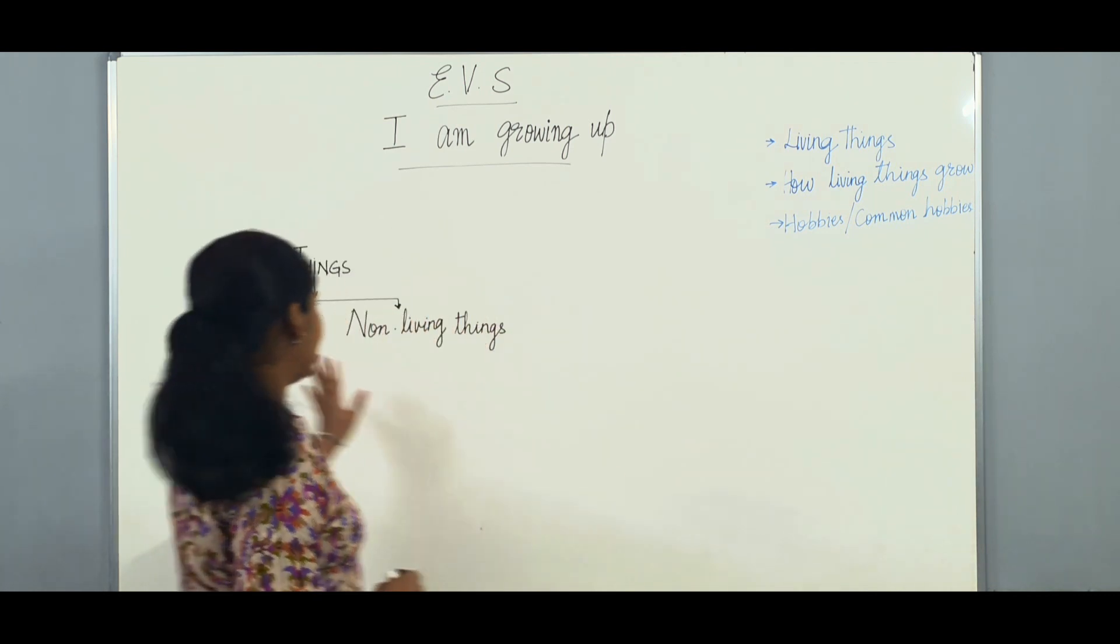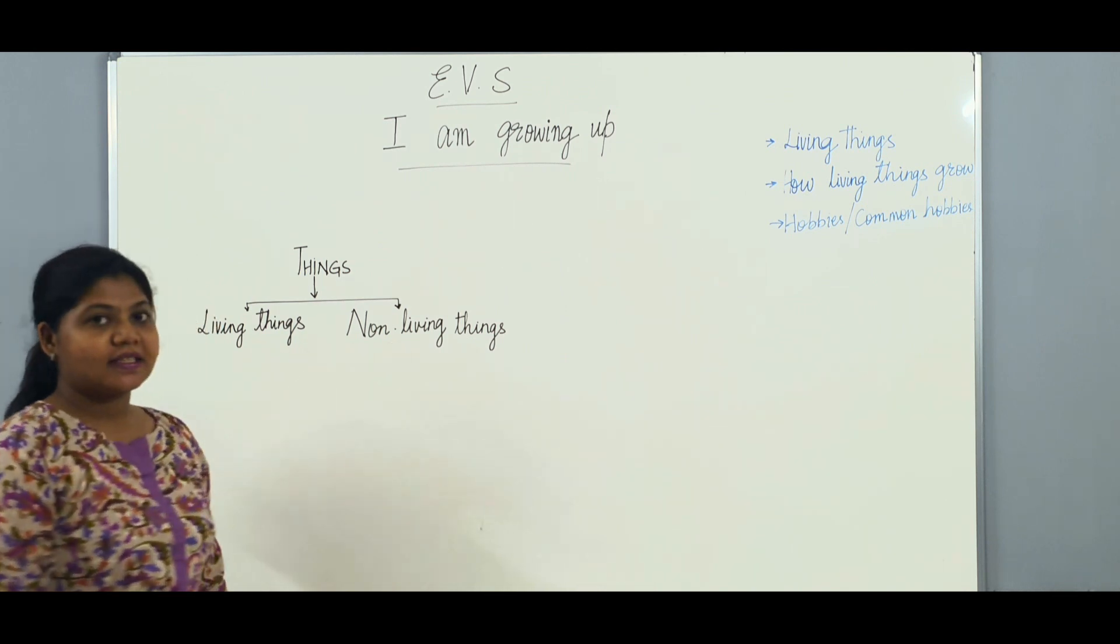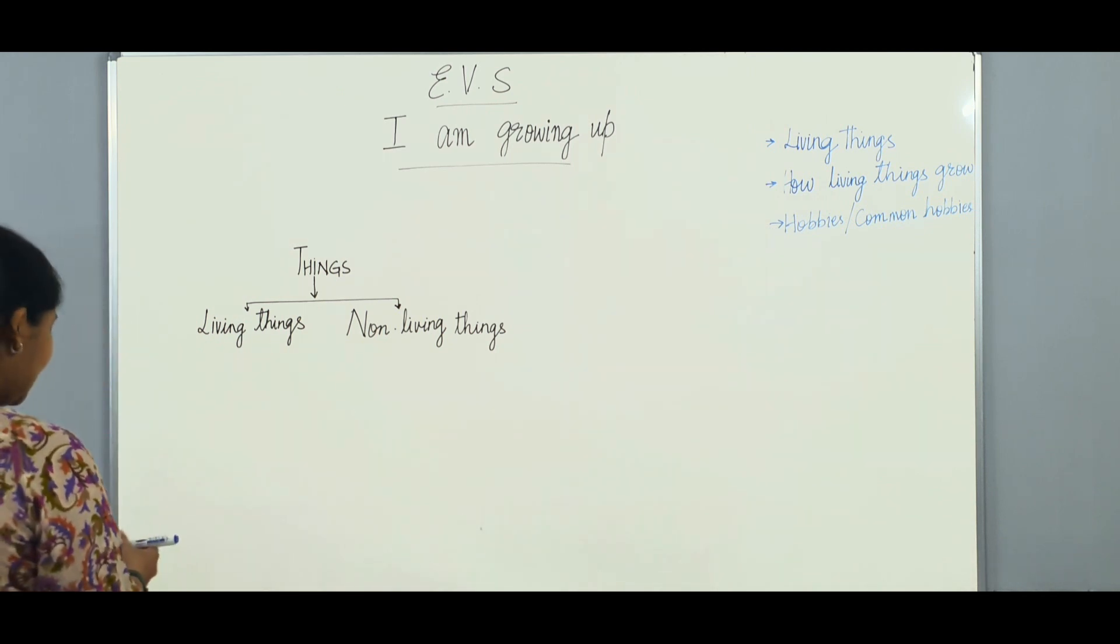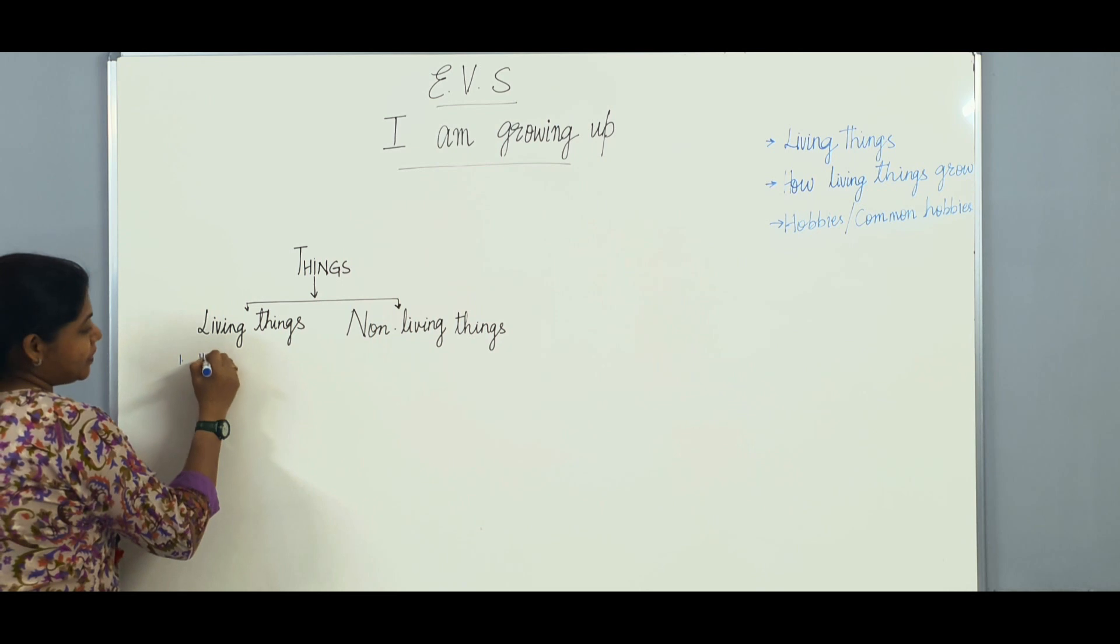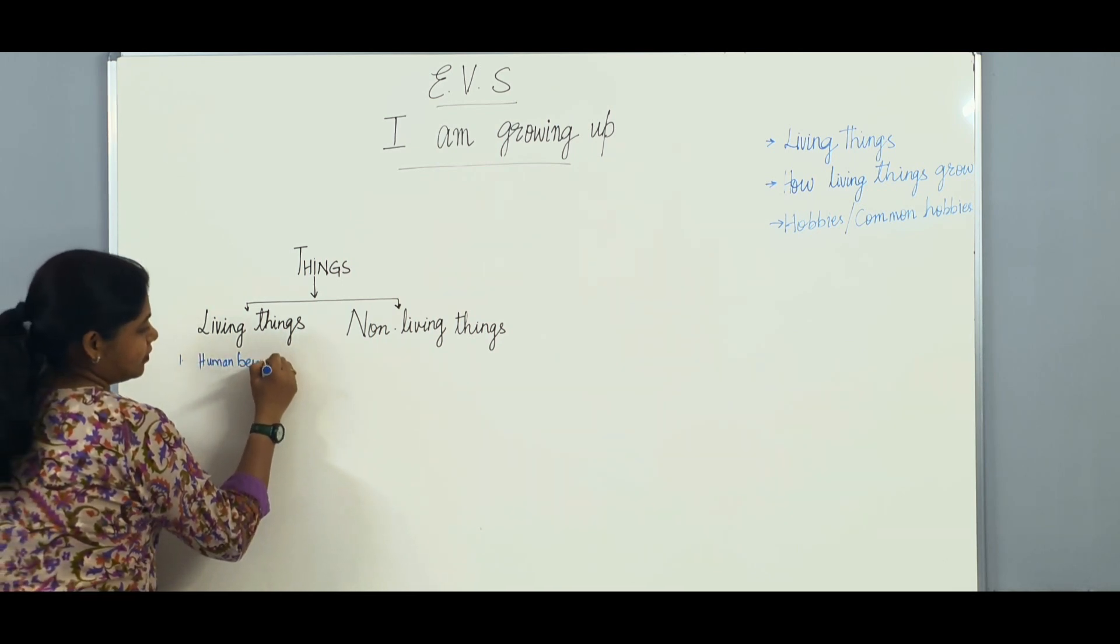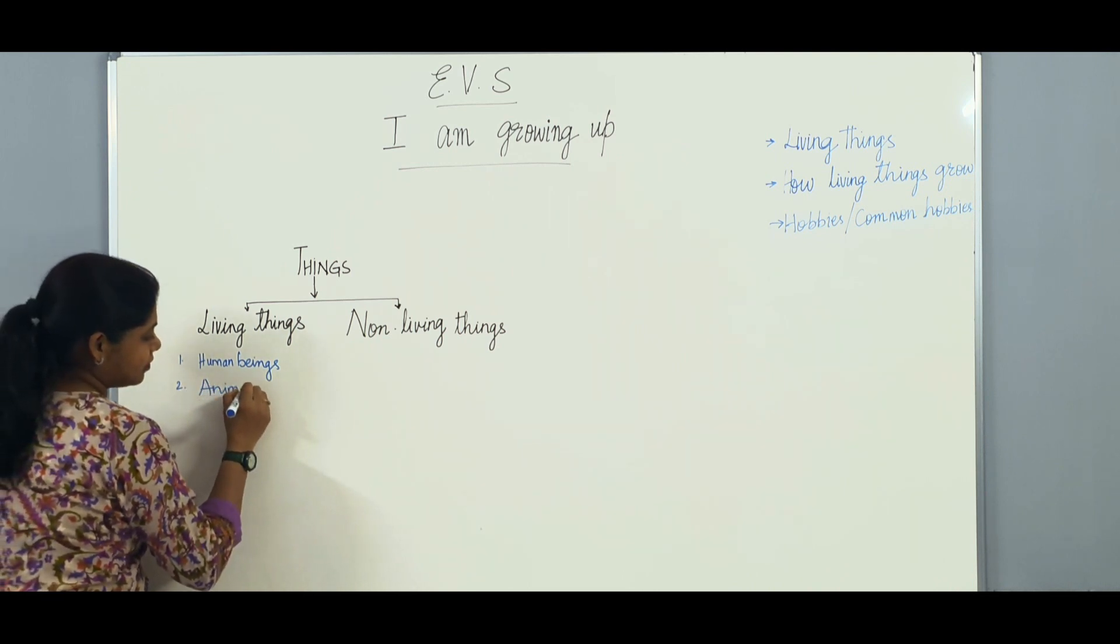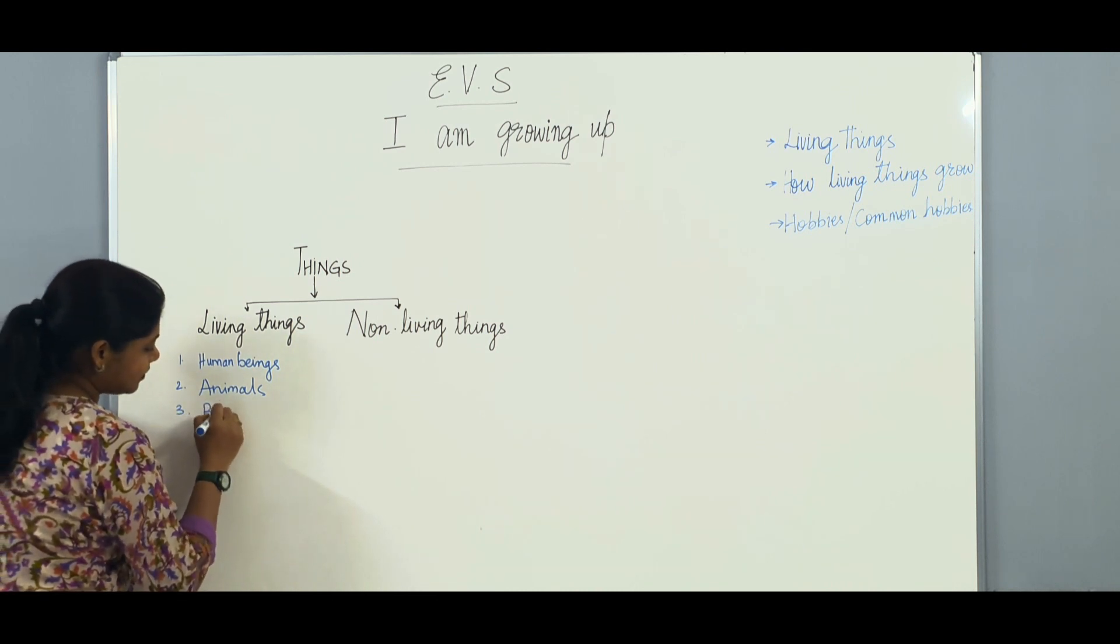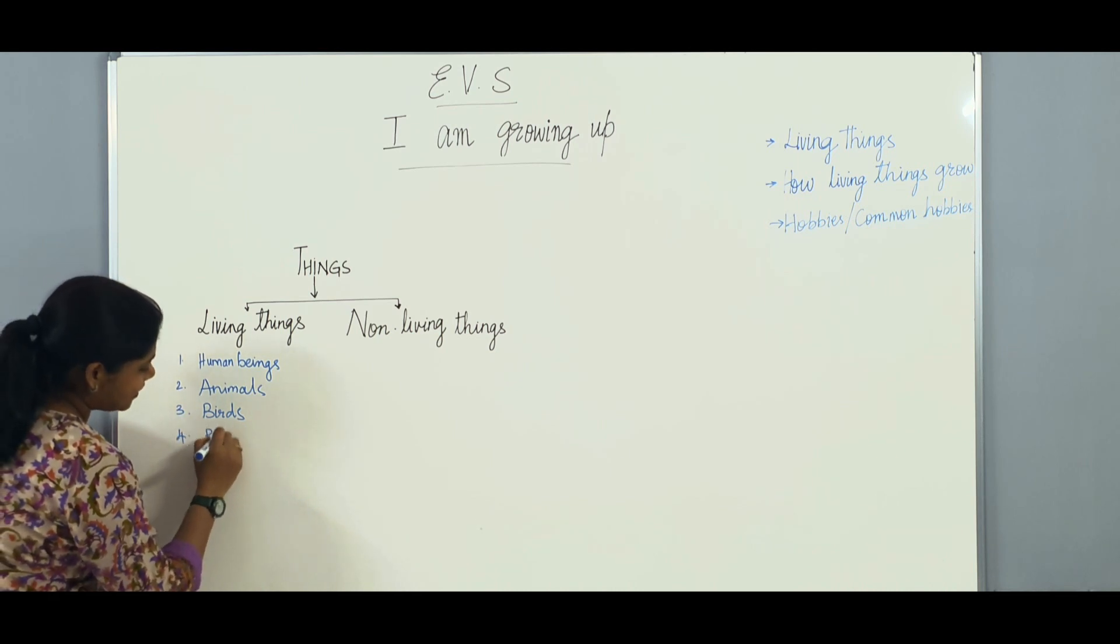One is living things and the other is non-living things. Now, first let us know what are living things. Living things can be human beings, animals, birds, plants.